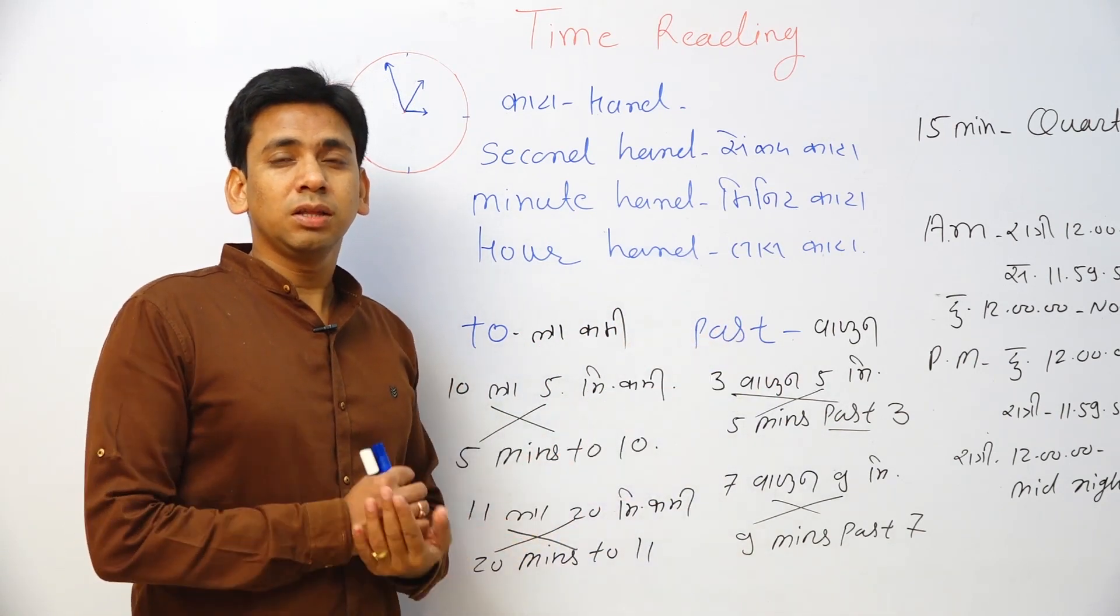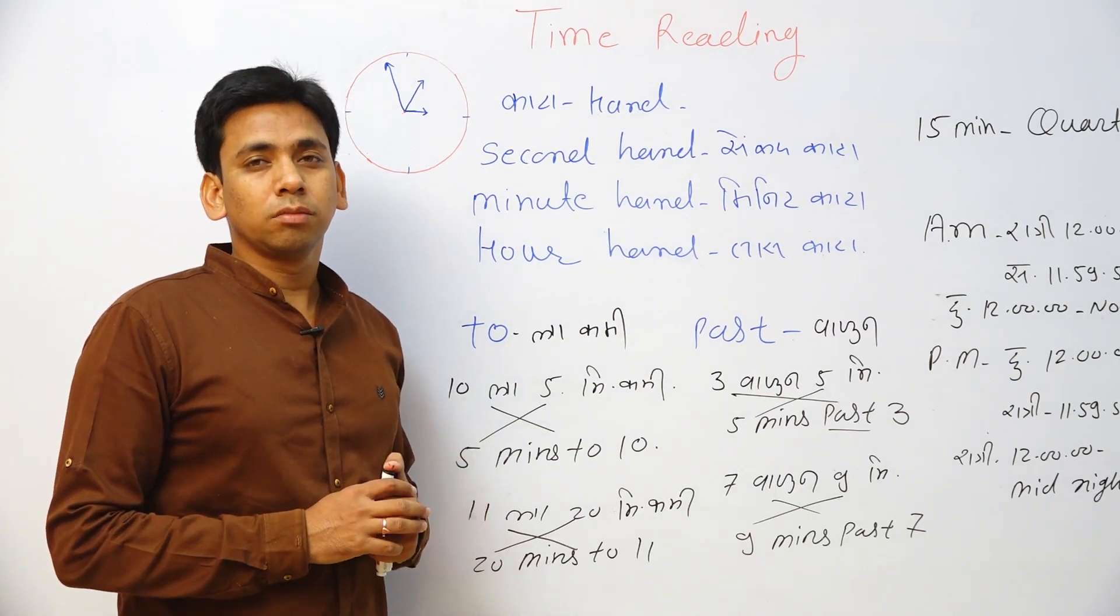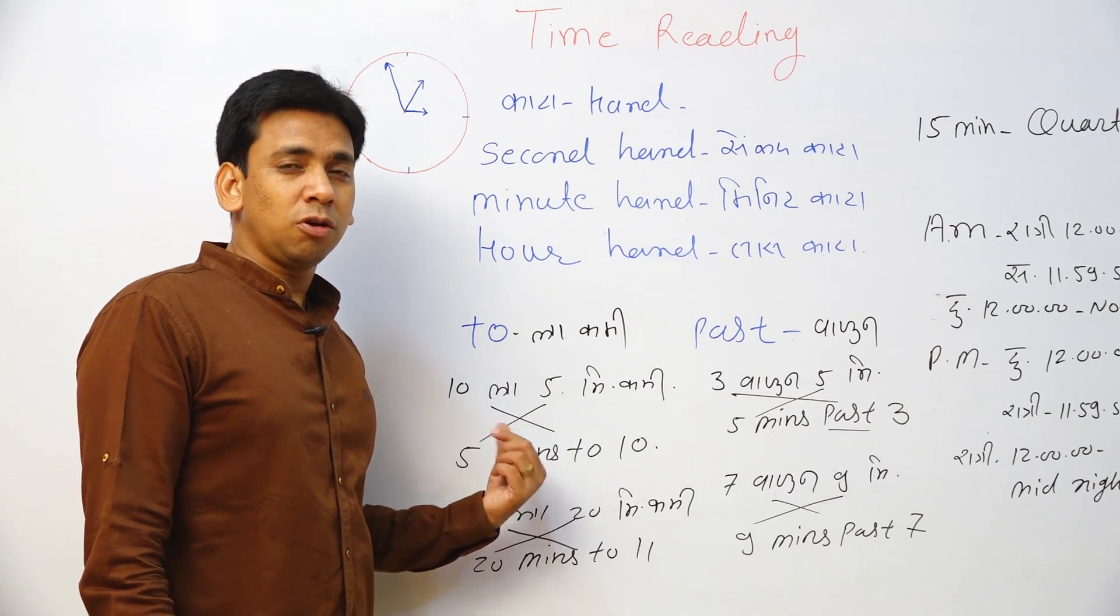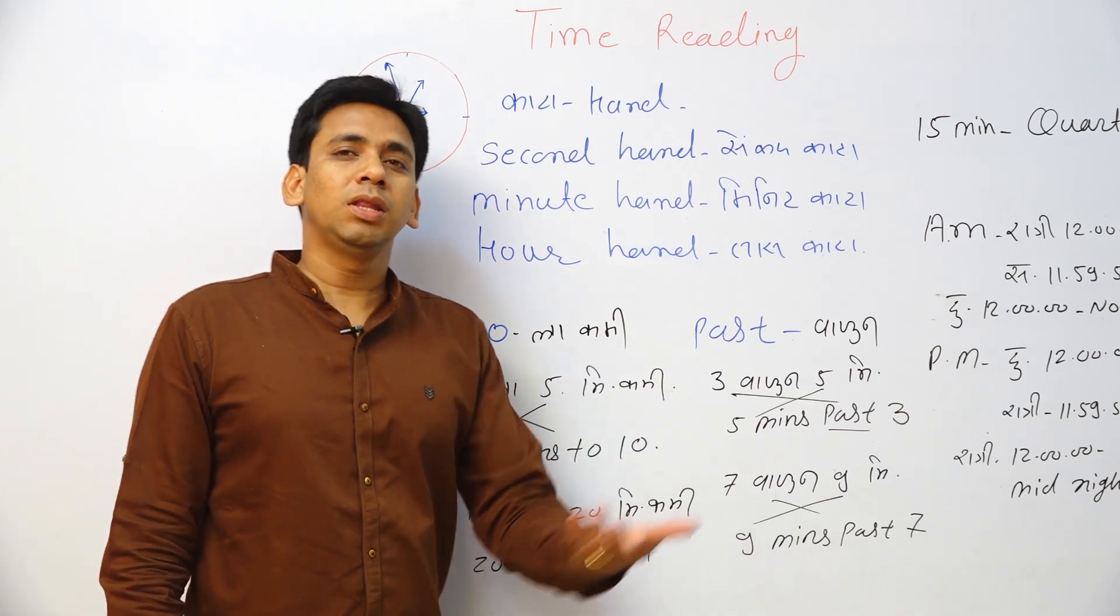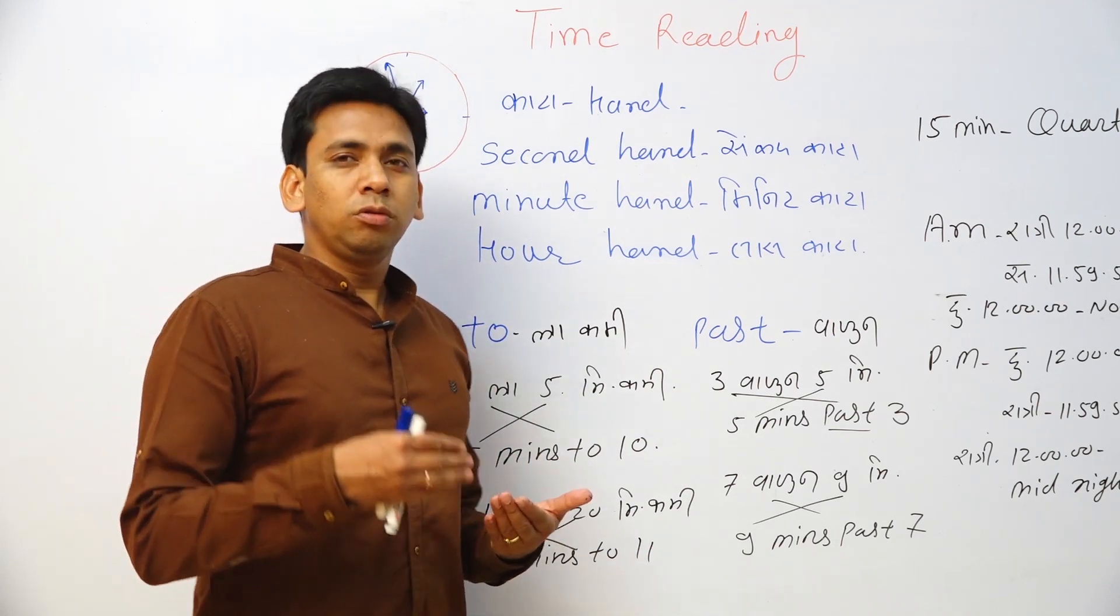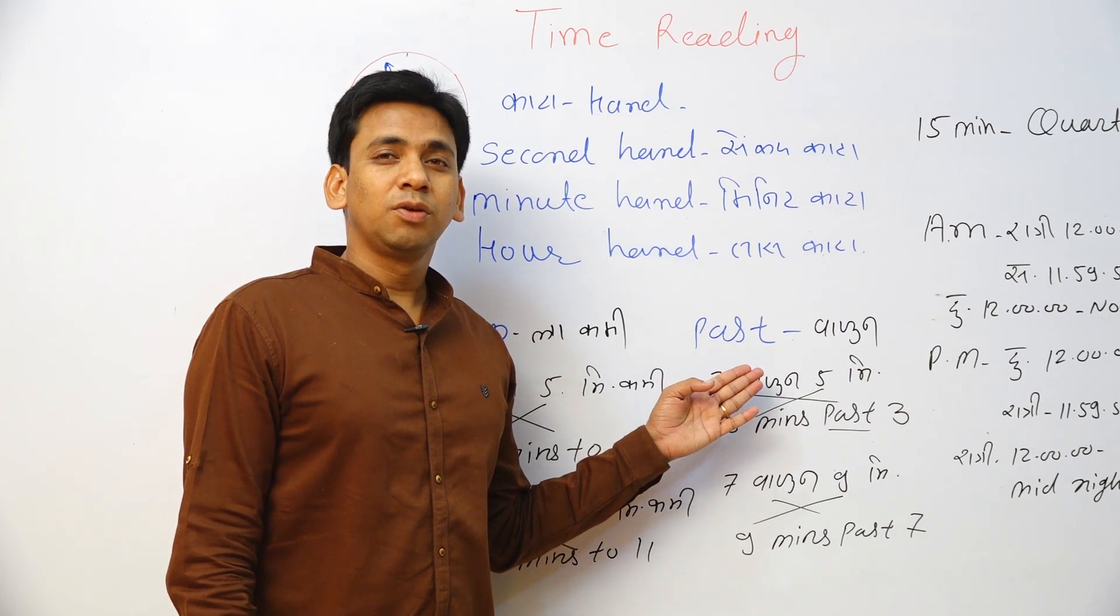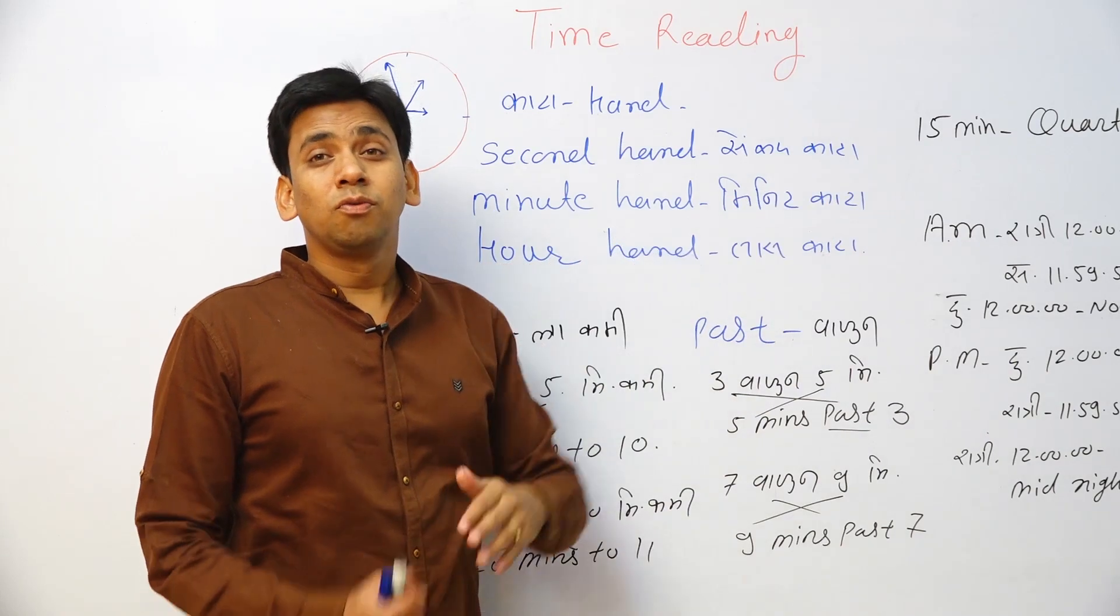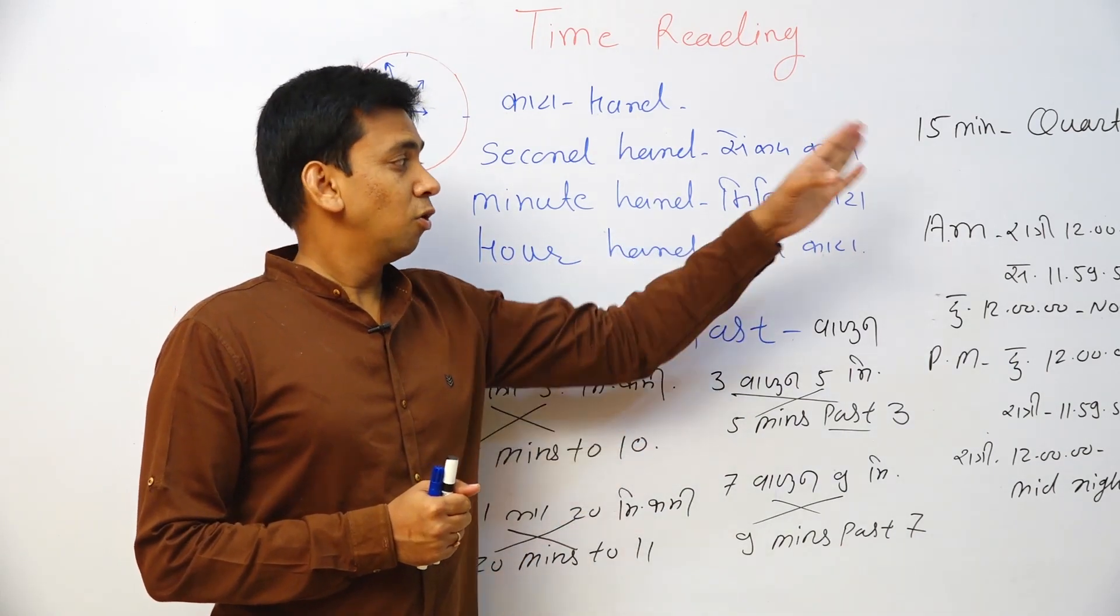That is 9 o'clock minus 10 minutes. Ten minutes to 9. And 9 o'clock plus 20 minutes. Past. Twenty minutes past 9. Clear? 15 minutes past 9, we say it as quarter. 15 minutes past 9, we say it as quarter.